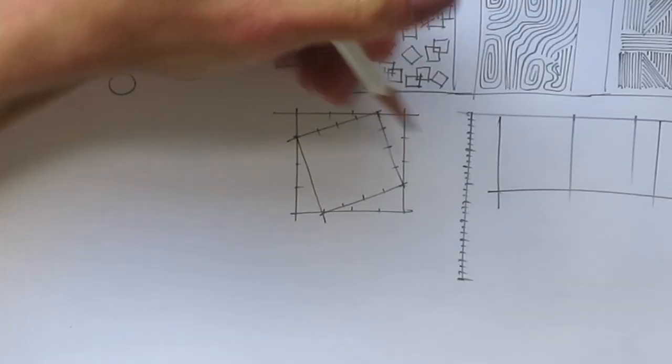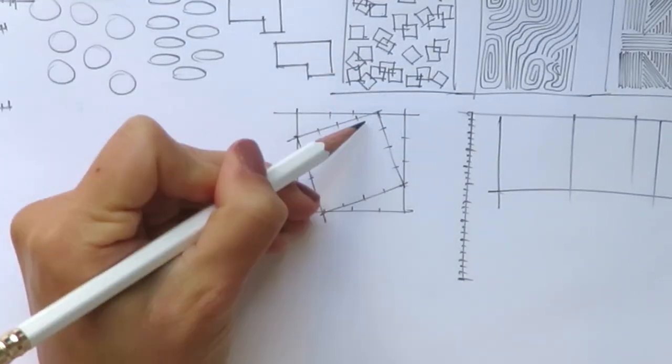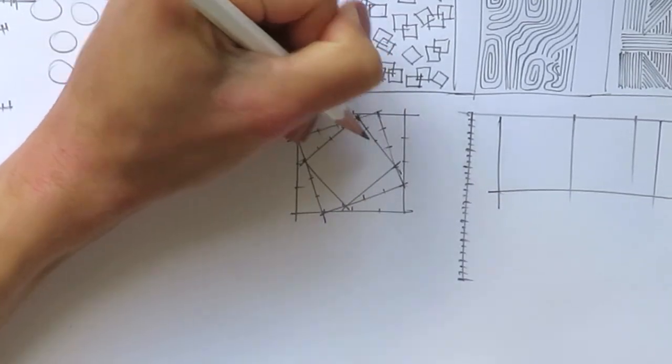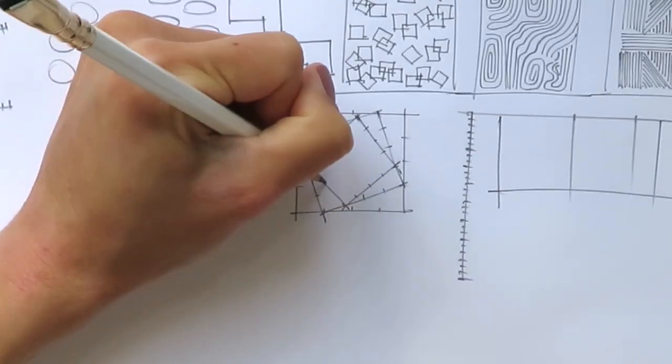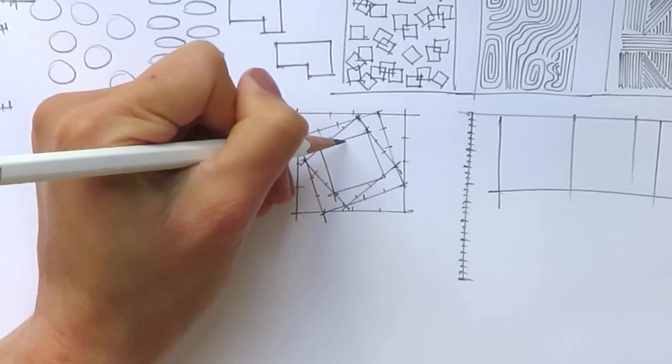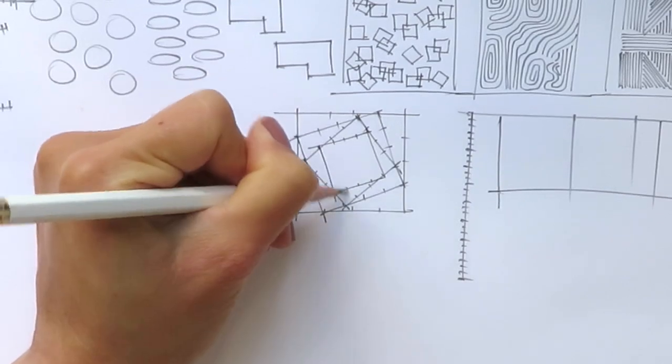So we divide it, and then we take one segment, and you see it looks like we rotate the square inside of a big square. And you can continue and continue.